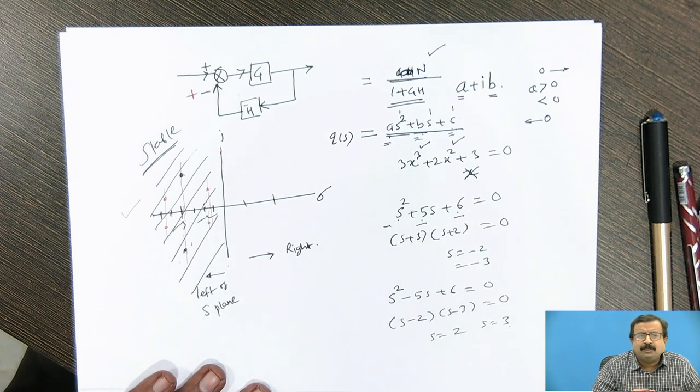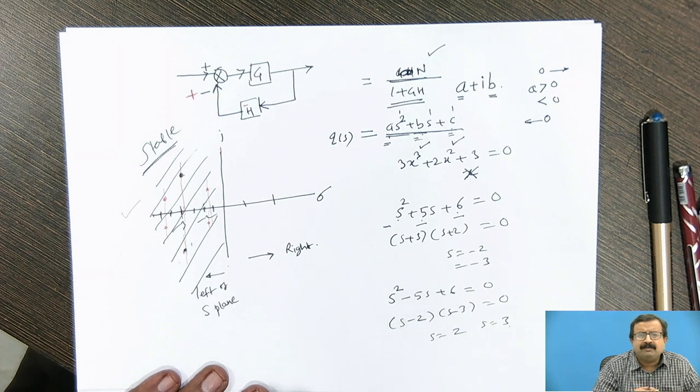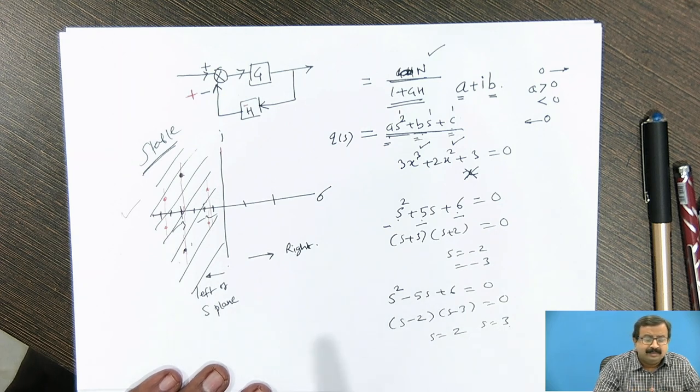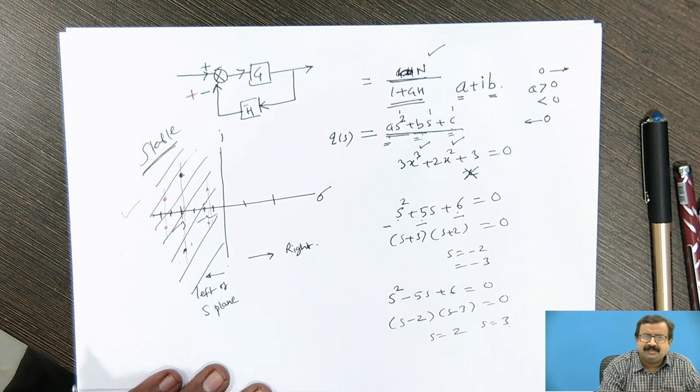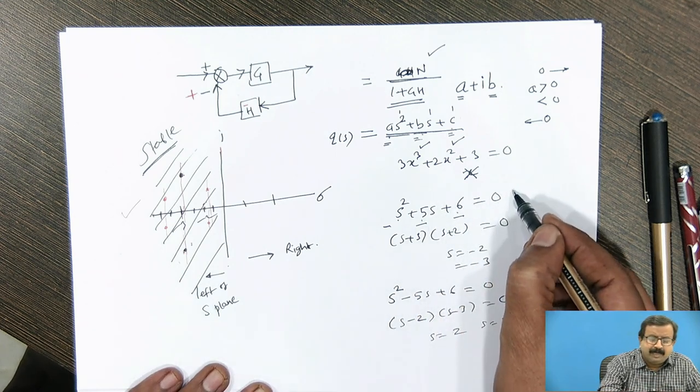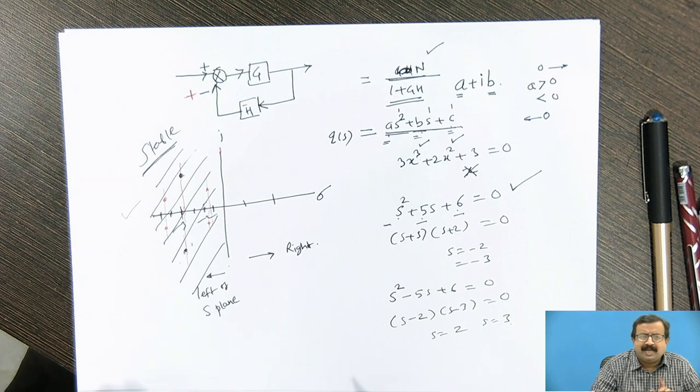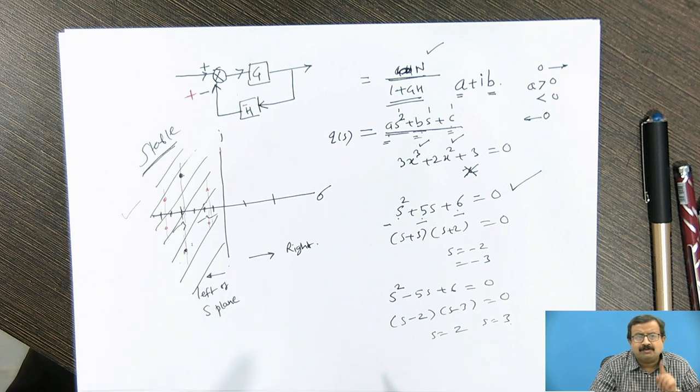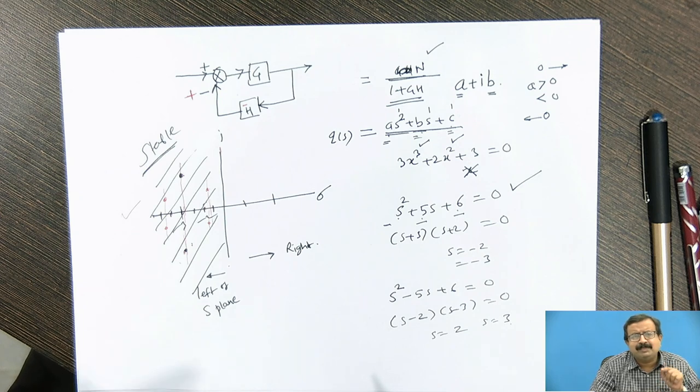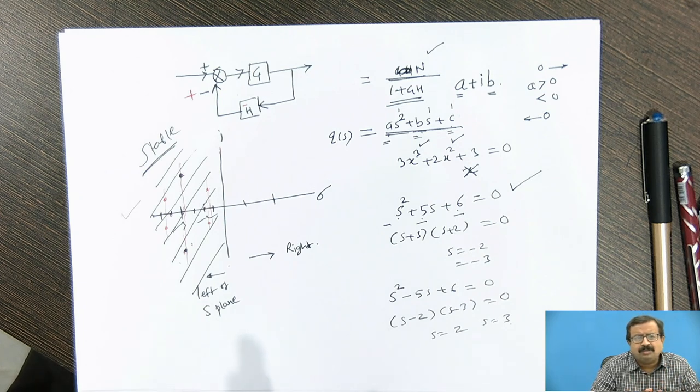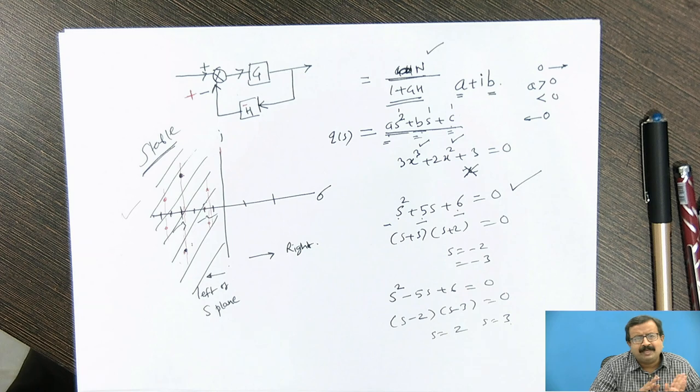And if my polynomial is only up to quadratic, linear and quadratic, this condition is also the sufficient condition. Means if my particular function is like this, I will say that without any problem, as it is quadratic, as it is a complete quadratic, and as the coefficients of all the terms have same sign, not necessarily positive but same sign, then the system is going to be stable because all the roots will lie on the left half of the s-plane.